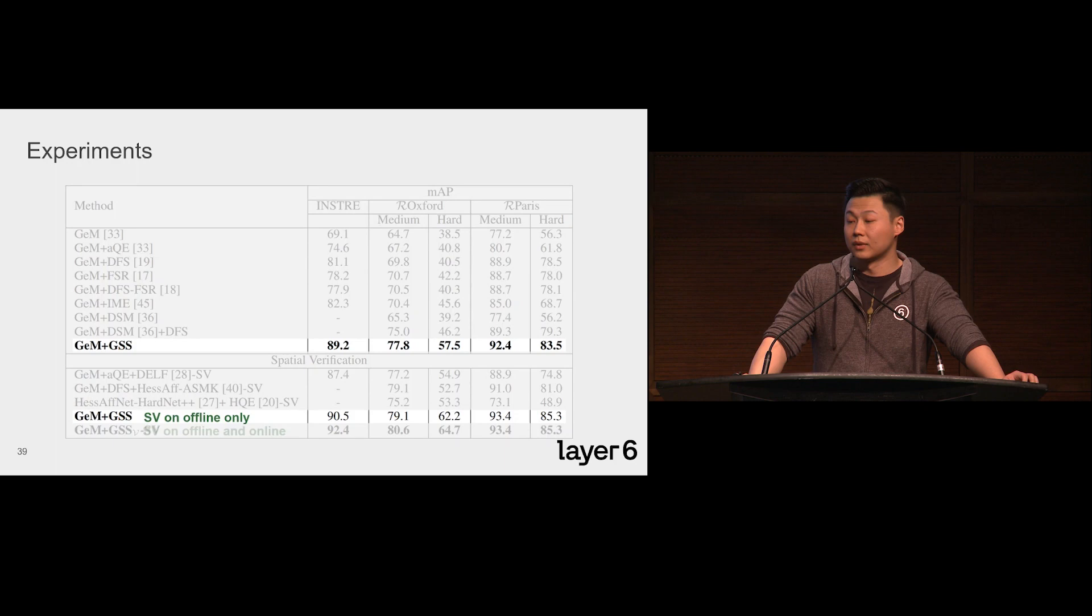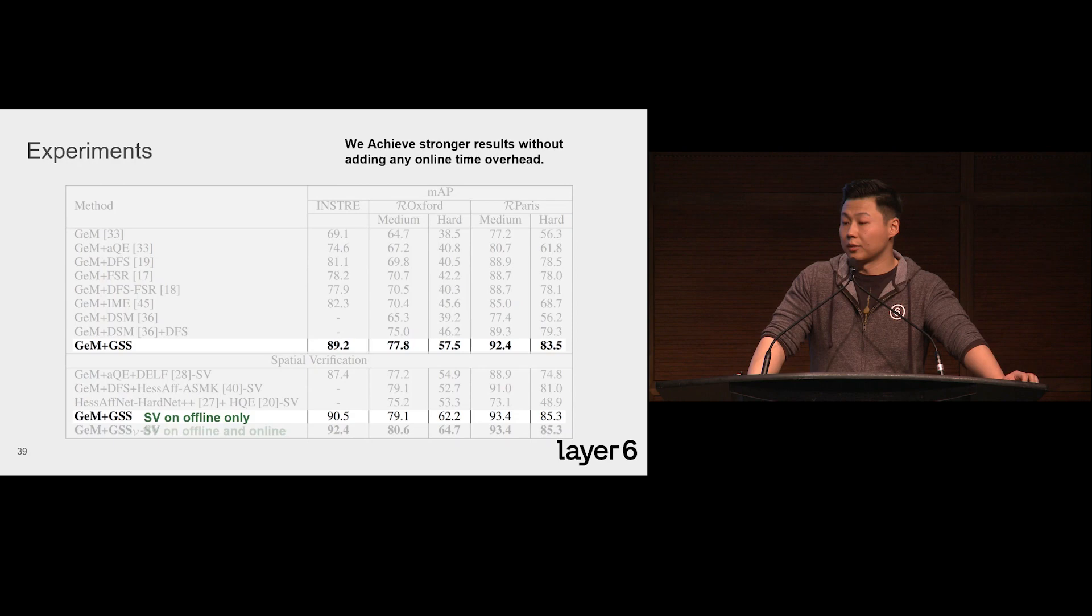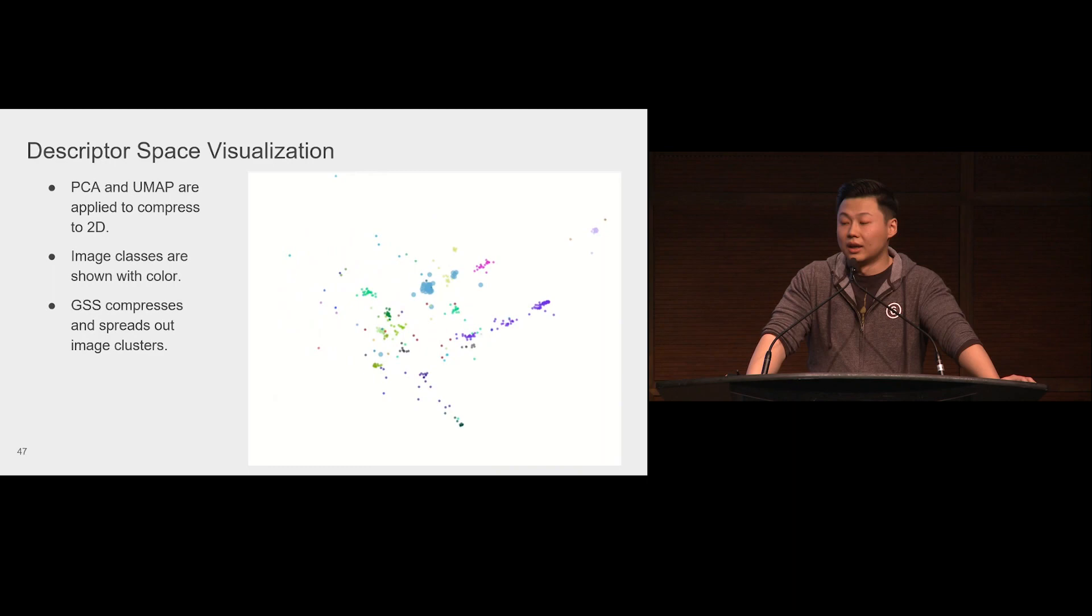We also visualize the descriptors in the original space and the new space learned by GSS. PCA and UMAP are used to visualize them in 2D space. The color here indicates which landmarks the images are depicting. As we can see, the CNN model tends to generate similar descriptors for visually similar images, even if they are actually different landmarks. That's why in the original space, different colors are mixed up together. As we can see, the GSS disentangles clusters from each other and pushes relevant images closer together.